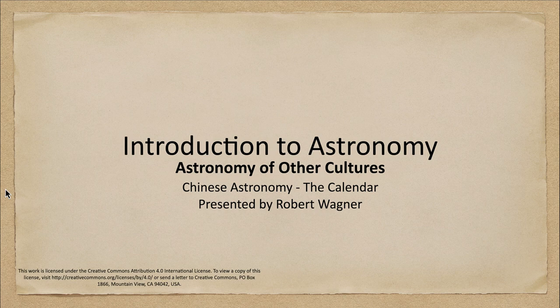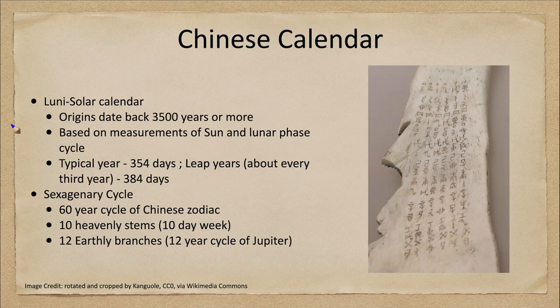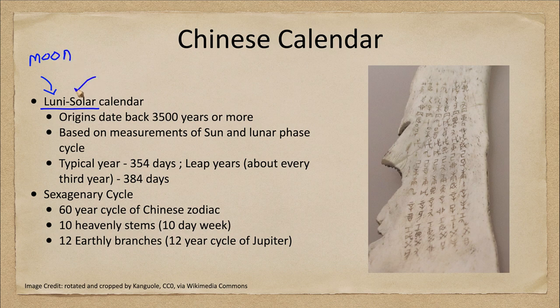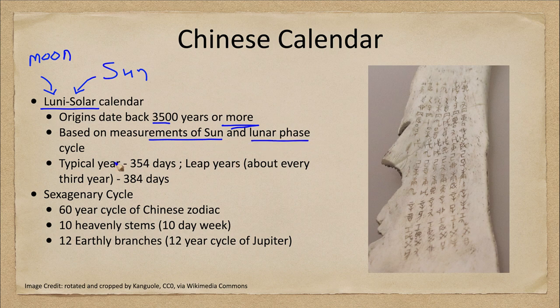The Chinese use what is called a lunar solar calendar, and that means it's based on both the moon and the sun. It dates back 3,500 years or even more. It is based on measurements of the sun and the lunar phase cycle — things that were very easy to see. You could watch the moon go through its phases, and we see very early recordings of some of that marked in this very early sample.